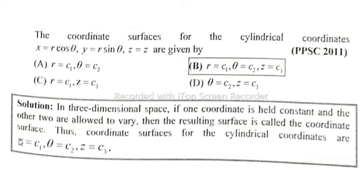r equals c₁, theta equals c₂, z equals c₃, so option B is correct.